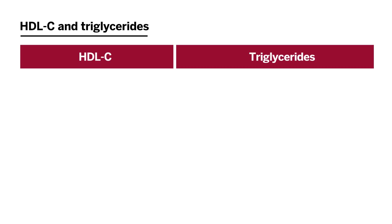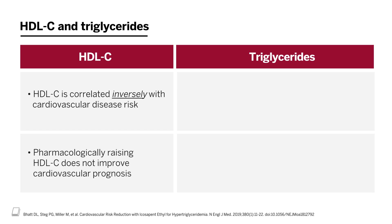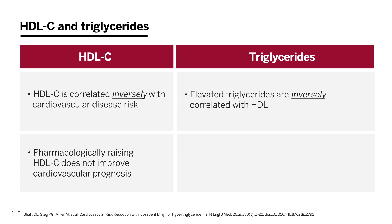Regarding other lipid fractions — HDL cholesterol and triglycerides: in the population, HDL cholesterol concentration is inversely correlated with cardiovascular disease risk, meaning higher HDL is associated with lower cardiovascular events. However, over the last decade, investigators have tried many different agents to pharmacologically increase HDL cholesterol, and none have shown improved cardiovascular prognosis except for one that also happened to lower LDL cholesterol. Elevated triglycerides are a potent risk factor for recurrent cardiovascular disease events, and an abundance of research suggests they may be a causal lipid fraction.